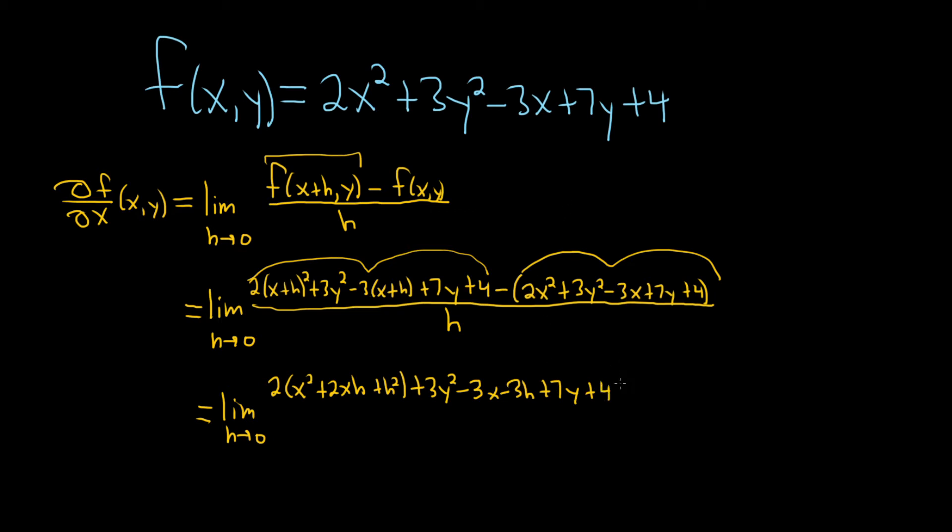Here, we just have to distribute the negative one, so it'll be negative 2x squared, negative 3y squared. Negative and negative is positive, so positive 3x. Negative 7y and a negative 4. Wow. Just a ridiculous, ridiculous mess. And I am sure some stuff will cancel. And this is all over h.